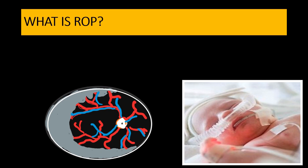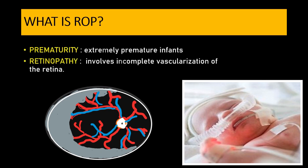The term ROP stands for retinopathy of prematurity. The term prematurity tells us that this is a condition seen in extremely premature infants, and retinopathy means it involves the vessels of the retina — specifically, in this condition we see incomplete vascularization of the retina.